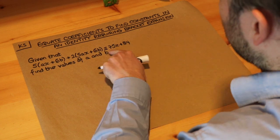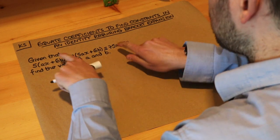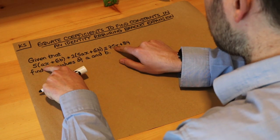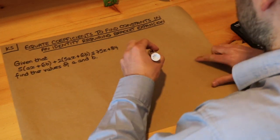And basically when we have an identity, we can equate the coefficients of the x terms and we can equate the constant terms.